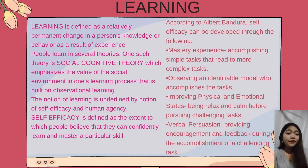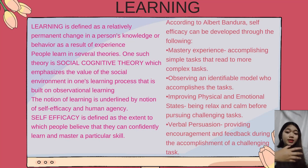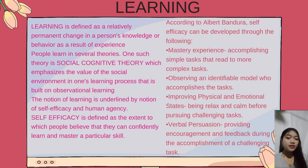An example is solving a difficult mathematical problem. The student listens to the math teacher, reads books, and memorizes the formulas and principles to be used, practices solving different equations, and does this over and over again to learn how to solve the mathematical problem accurately with ease. People learn through several theories. One such theory is the social cognitive theory, which emphasizes the value of the social environment in one's learning process, built on observational learning. There are four stages in observational learning: attention, retention, motor reproduction, and motivation.